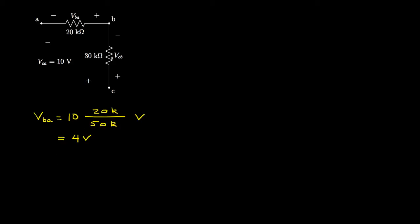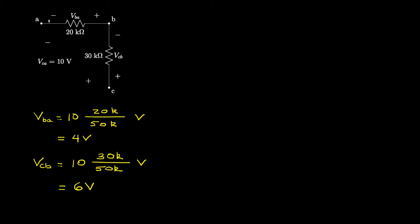The voltage at point C relative to point B — across the 30 kΩ resistor — is the total voltage times 30,000 over 50,000, which gives 6 volts. This makes sense: if there's a 10-volt increase from A to C, and 4 volts occur from A to B, then the remaining 6 volts must occur from B to C.